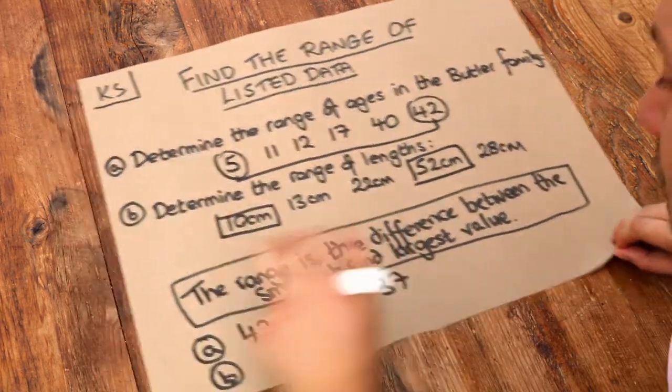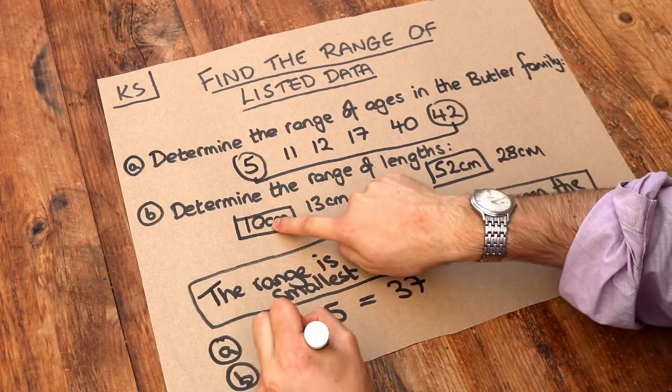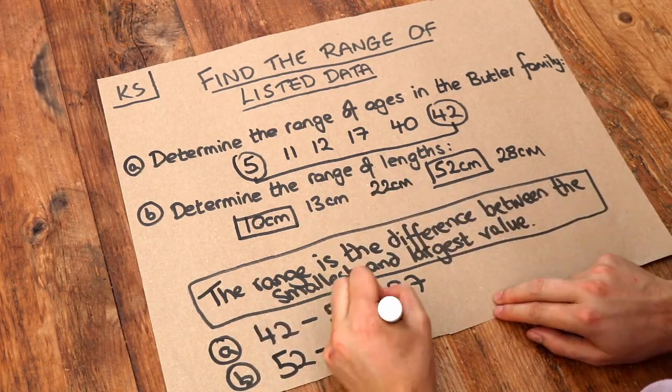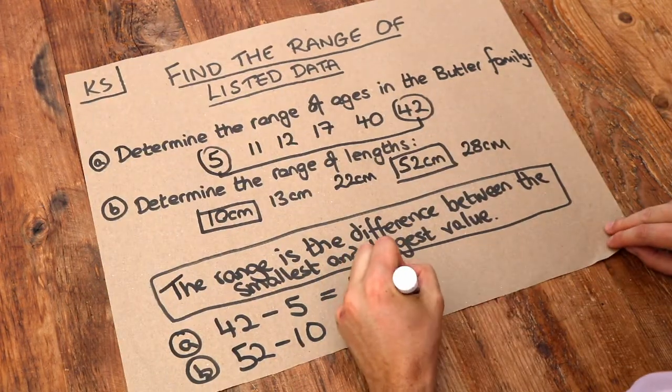So we just have to find the difference between those two values. We do the bigger value minus the smaller value to find the difference. And that gives you 42. And we should put a unit, so 42 centimeters.